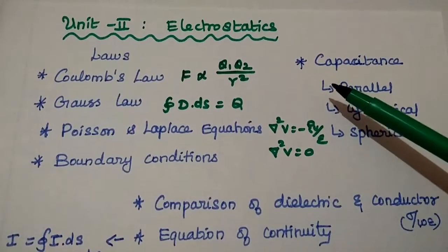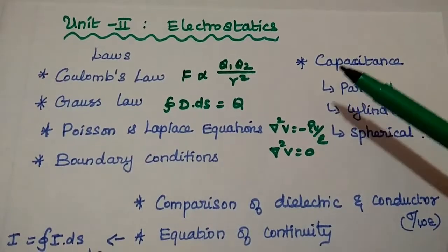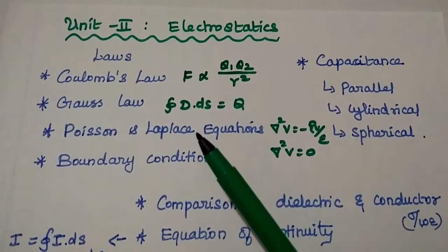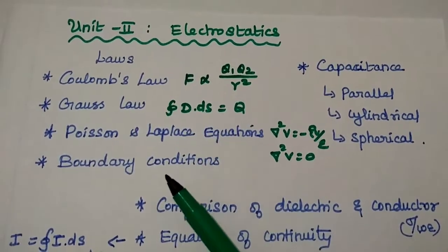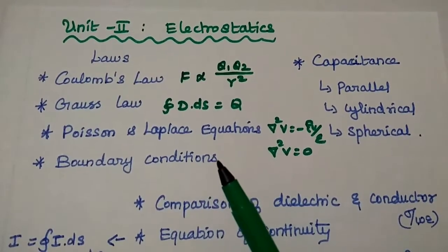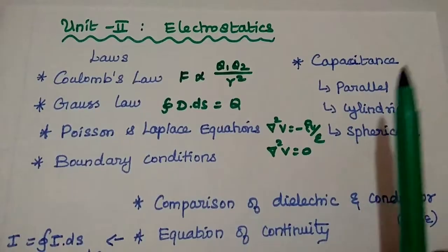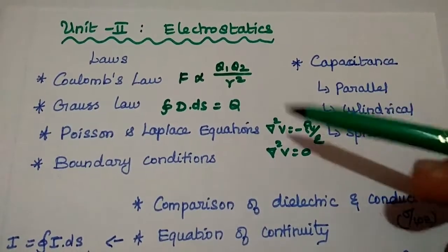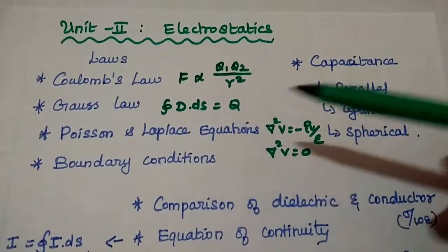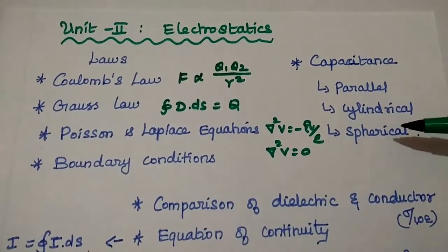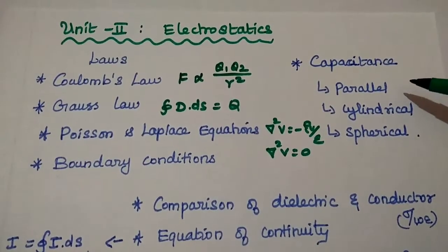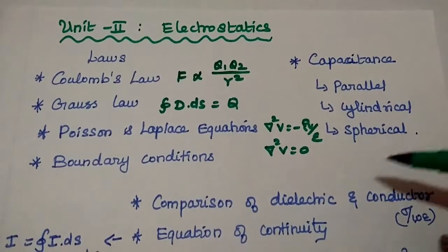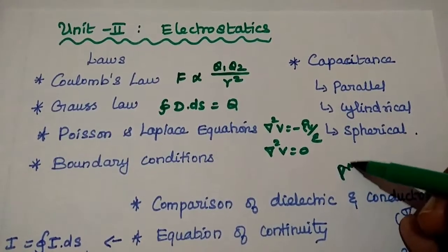The second unit is all about electrostatics, divided into two halves. The first half covers Coulomb's law, Gauss's law, Poisson and Laplace equations, and boundary conditions. The second half is all about capacitance. We can expect questions from Coulomb's law, Gauss's law, boundary conditions, or capacitors — including derivations of capacitance for parallel plate, cylindrical, and spherical capacitors — as well as numerical problems.